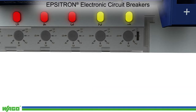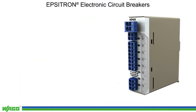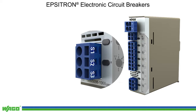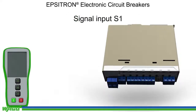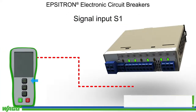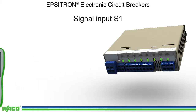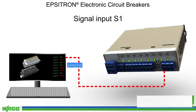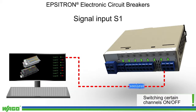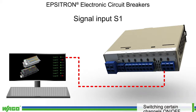WAGO's ECBs feature one digital signal input S1 and two signal outputs S2 and S3 for reading out the operational status. Signal input S1 allows all channels to be remotely reset. In combination with a PLC or an IPC, each channel can be switched on or off separately.